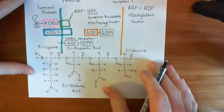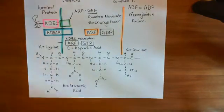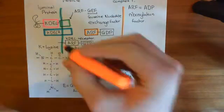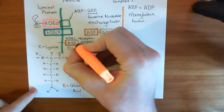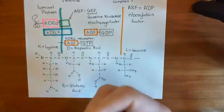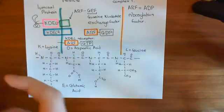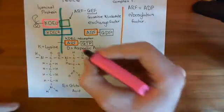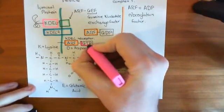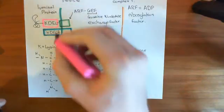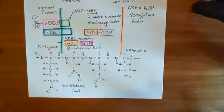Here's the ARF in orange — the ADP ribosylation factor — which has now changed conformation so that it has this hydrophobic tail, which allows it to latch onto the cis-Golgi membrane.